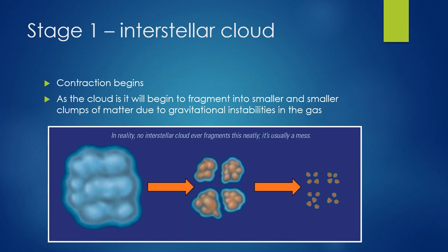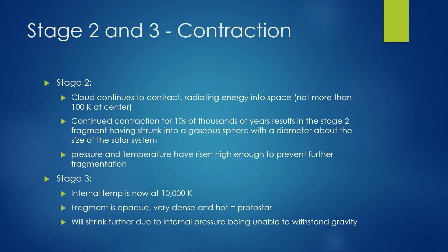There are multiple stages to cloud formation. Stage one is the interstellar cloud formation — contraction begins due to some outside force like a supernova. As the cloud is compressed past the point where gravity overcomes gas pressure, it will begin to fragment into smaller and smaller clumps of matter due to gravitational instabilities. Depending on cloud conditions, this can lead to a few dozen stars larger than our sun, or thousands of comparable or smaller sizes. Fragmentation is eventually stopped by the density of cloud fragments. As the cloud continues to contract, it radiates energy into space, and as fragments contract further, the temperature and pressure rise, increasing density and ending fragmentation. After several tens of thousands of years, the stage two fragment will have shrunk into a gaseous sphere with a diameter of about our solar system, with the central temperature having reached around 10,000 Kelvin.